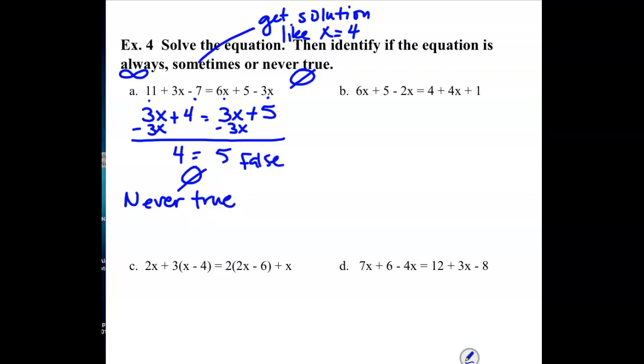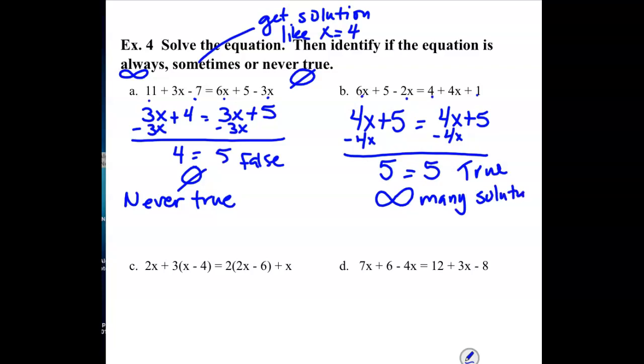For this next one, combining like terms, the 6x minus 2x is 4x. On this side, the 4 and the 1 adds up to 5. So I have 4x plus 5 equaling 4x plus 5. Getting my x's together, they disappear. But now I'm left with a true statement. 5 does equal 5. That means there's infinitely many solutions. That means it's always true. It doesn't matter what x is, it's always going to work.